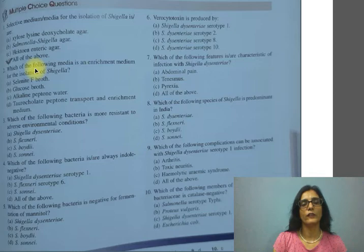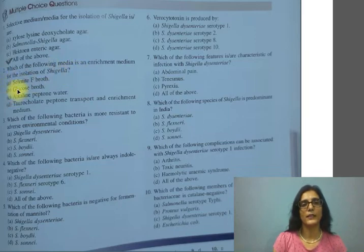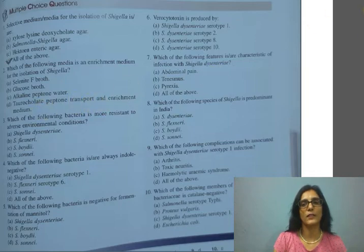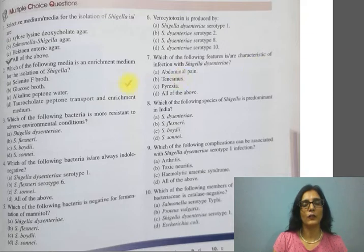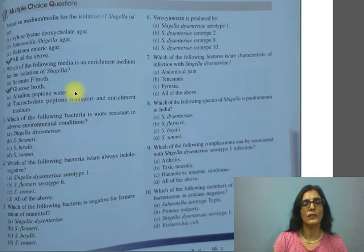Next question: which of the following media is an enrichment medium for the isolation of Shigella? The options are: A) Selenite F broth, B) Glucose broth, C) Alkaline Peptone Water, D) Tetrathionate Peptone Transport and Enrichment medium. The enrichment medium allows the growth of only a particular bacteria, and the enrichment medium for Shigella is B, Glucose broth.